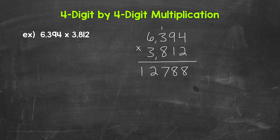Now we are done with this 2. We're going to cross numbers off as we're done with them, so that we don't confuse those numbers with any other numbers later in the problem. It helps us stay organized.